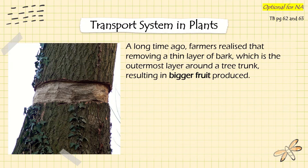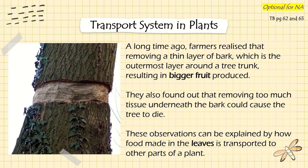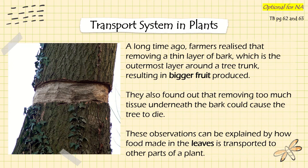Now we're looking at the transport system in plants. There's an interesting backstory: in the past, farmers would cut away a layer of the bark from a fruit tree. They realized that when they do that, the fruits actually get bigger - and bigger fruits sell at a better price. However, farmers also found that if they remove too much tissue underneath the bark - cutting too deep - it can cause the entire tree to die.